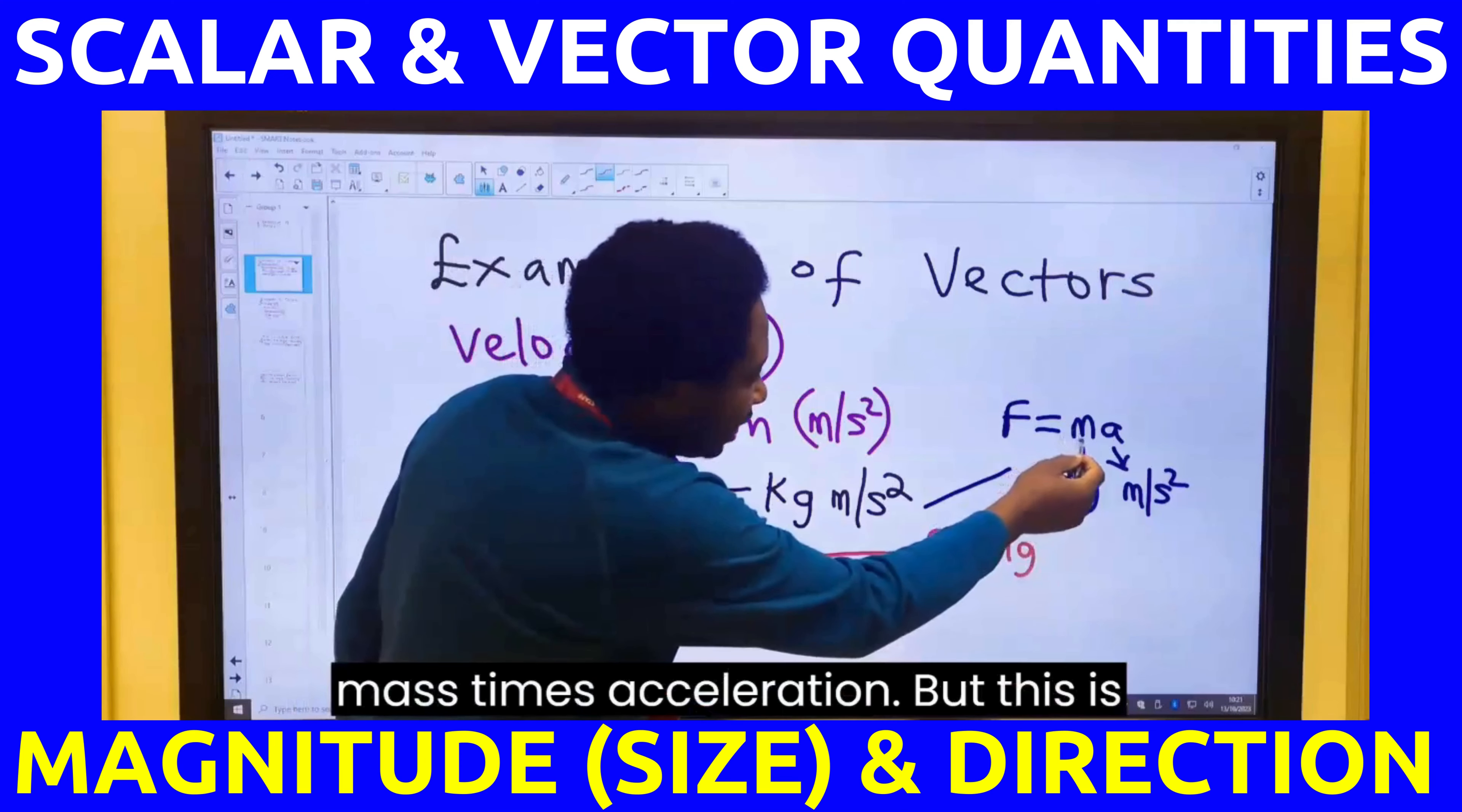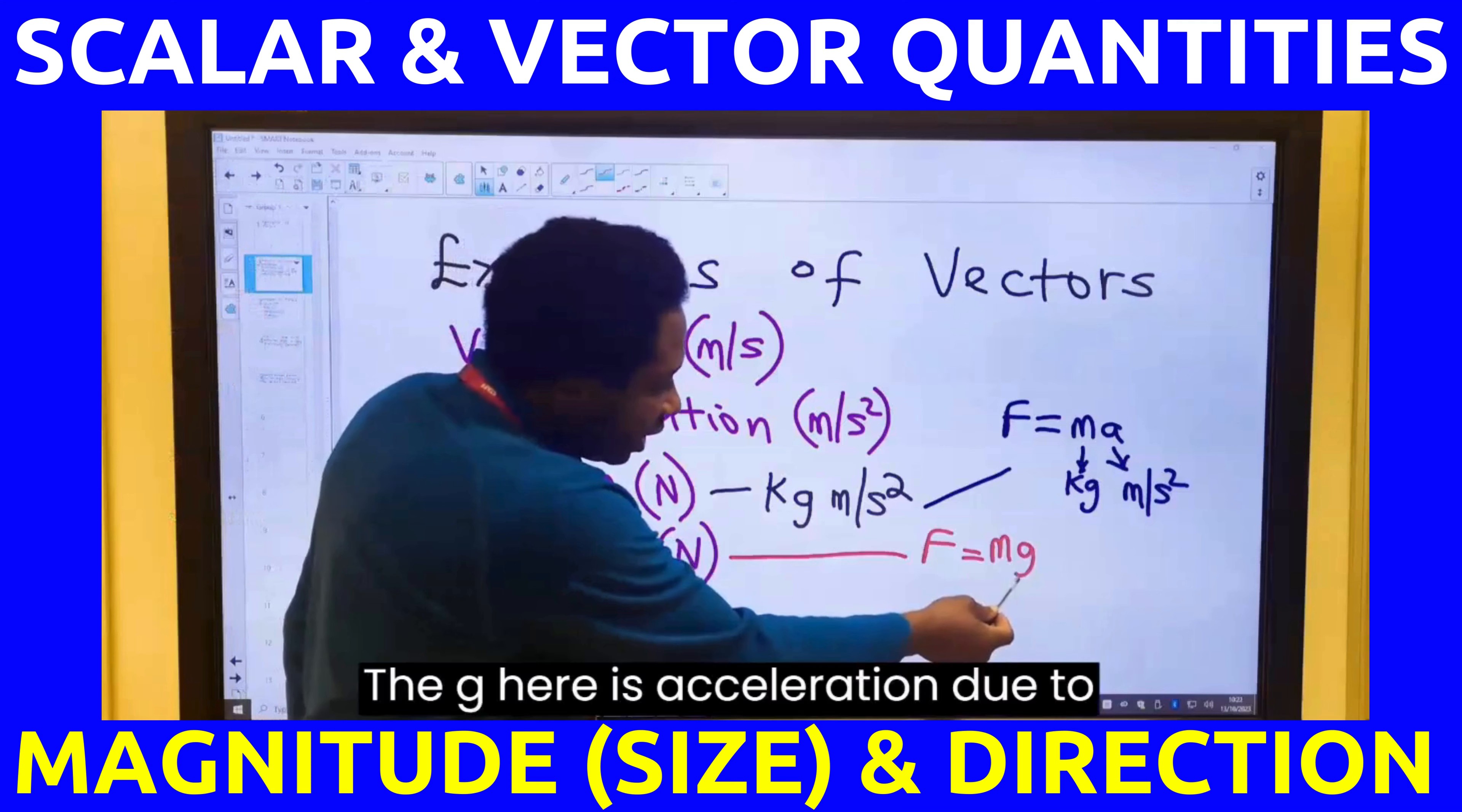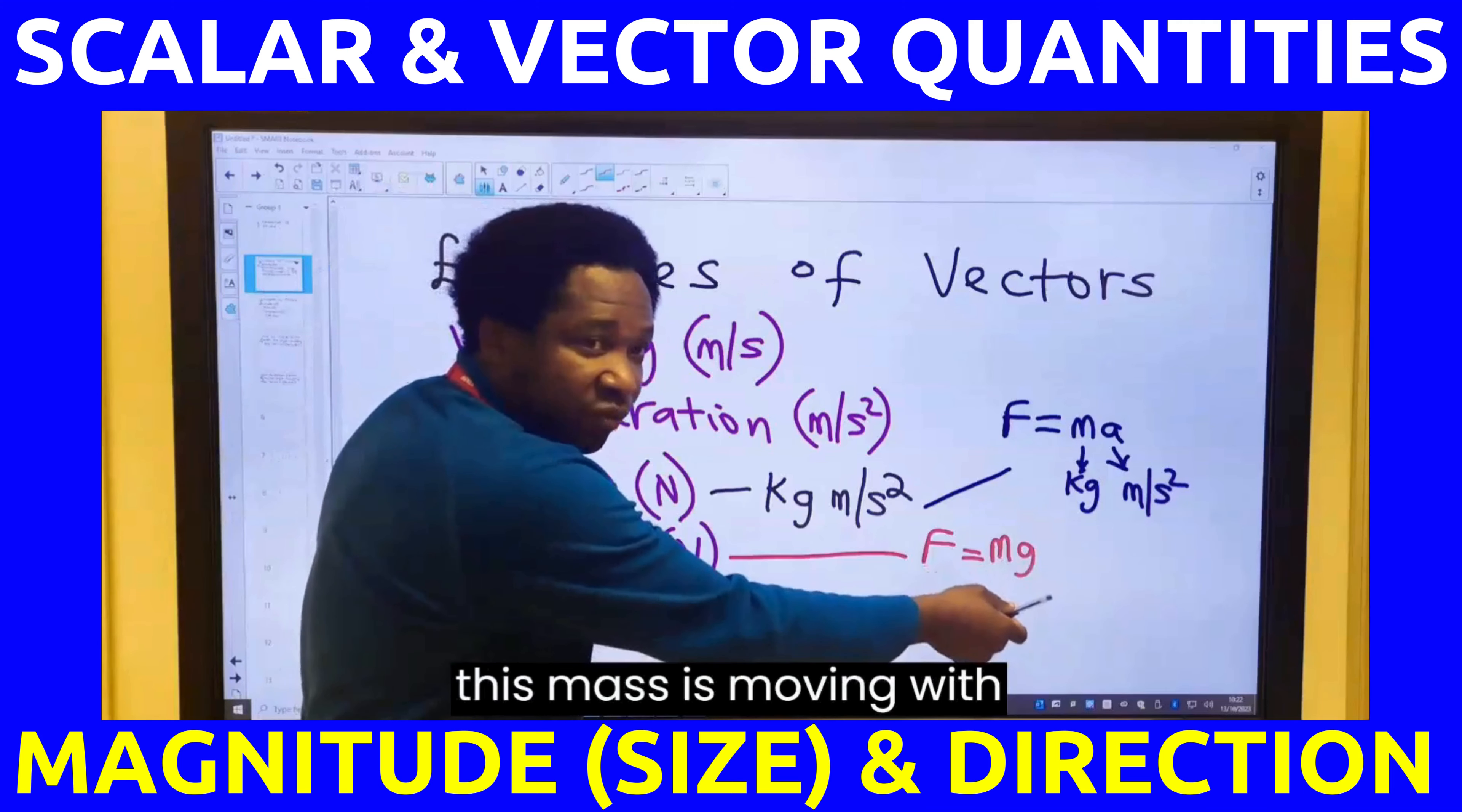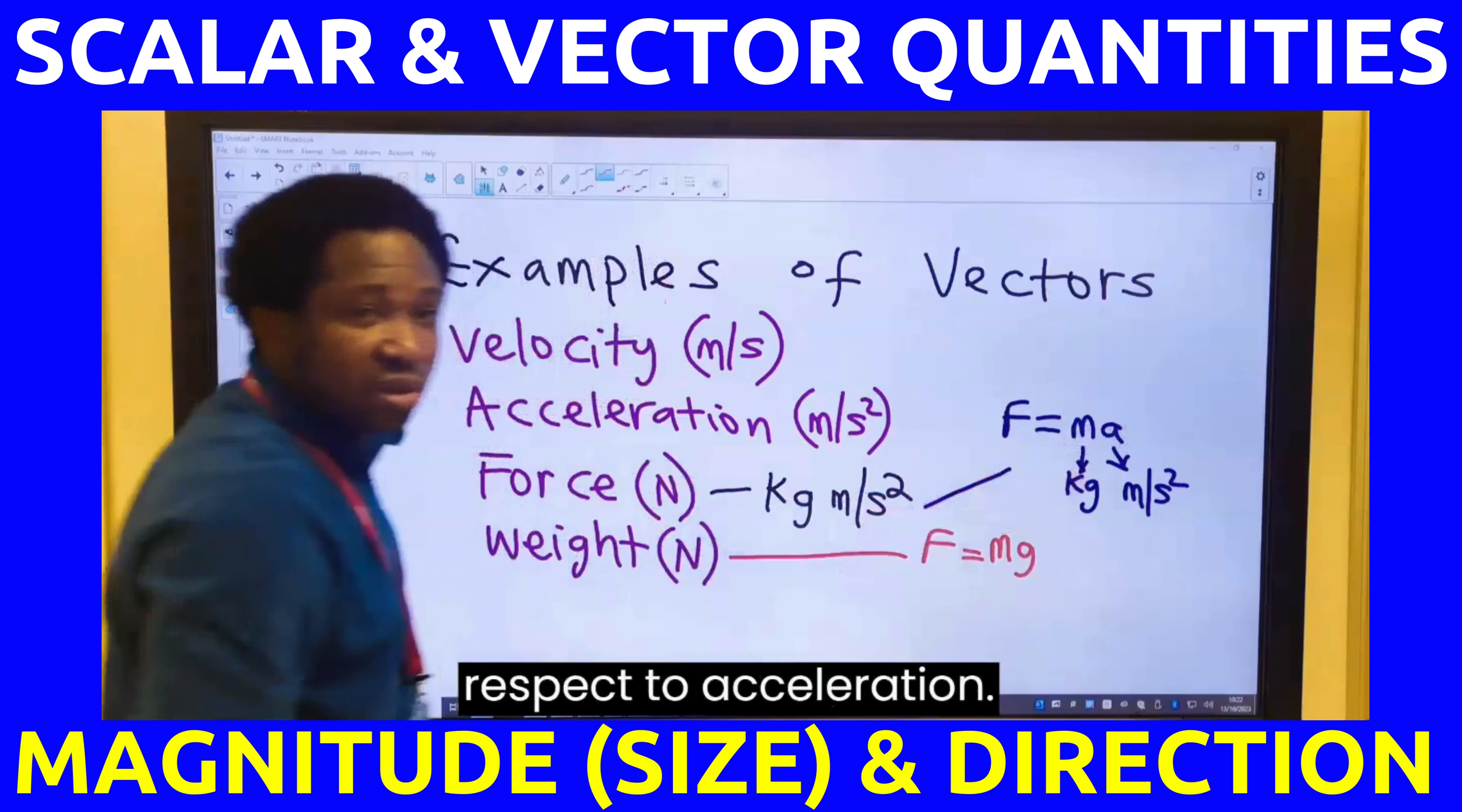So, this is mass times acceleration, but this is mass times gravity. The g here is acceleration due to gravity. The g here means that this mass is moving with gravity, while the a here means that the force is moving a mass with respect to acceleration.